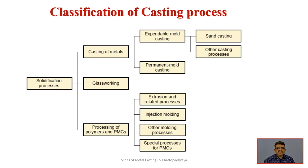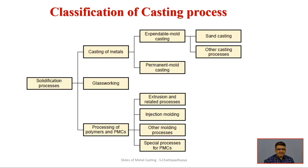We will discuss the classification of casting processes. These are mainly divided into three classes: one is casting of metals, which has a very important role in applications; the second is glass working; and the third, gaining a lot of importance today, is processing of polymers and polymer matrix composites. These are new materials with favorable properties. The classical casting of metals is still relevant and a lot of products are still produced by the casting process.